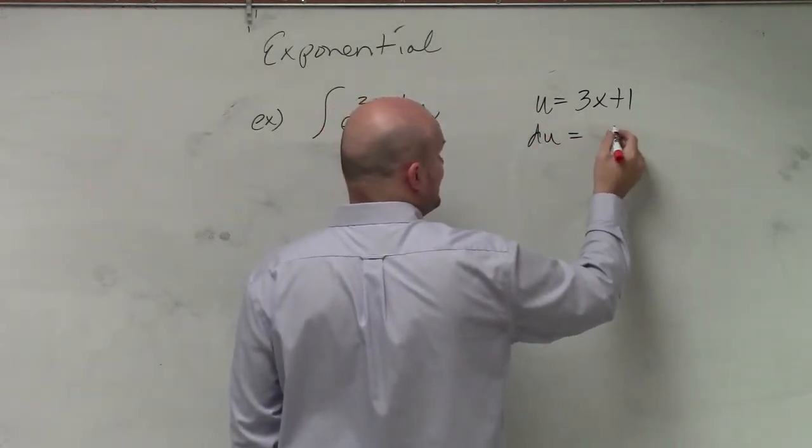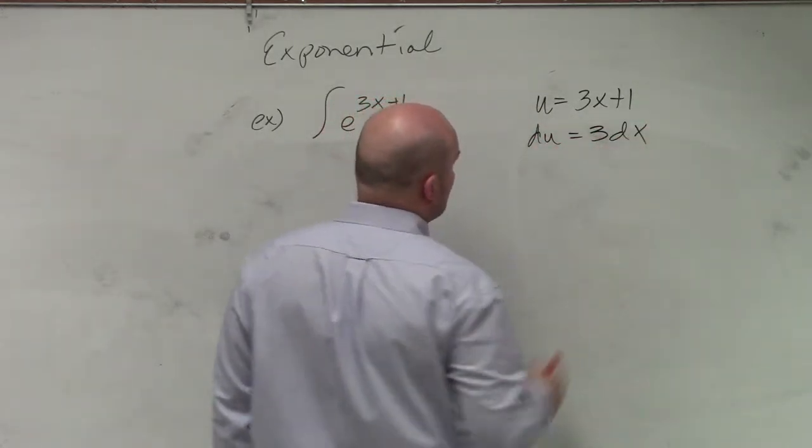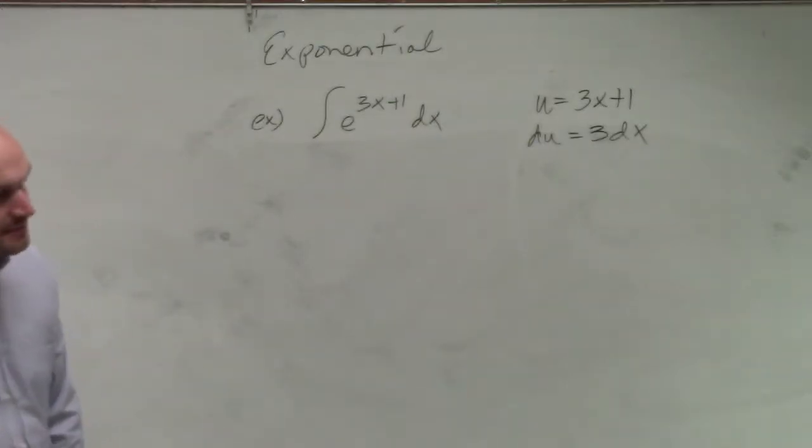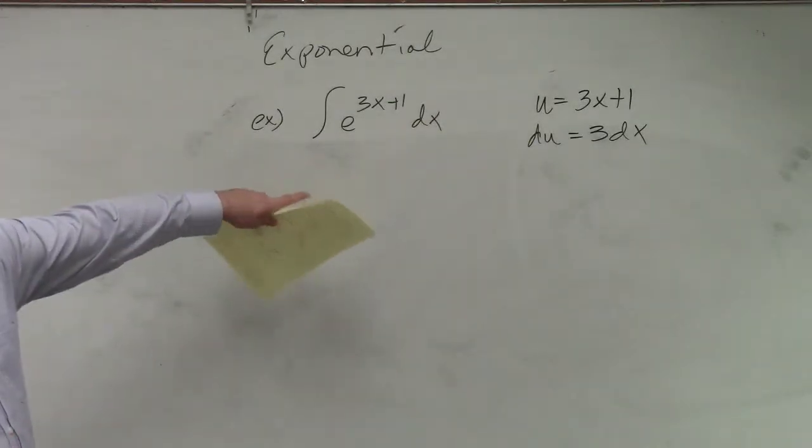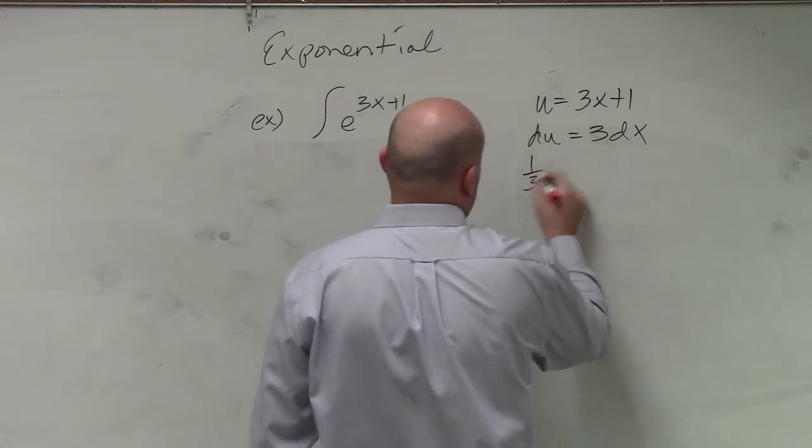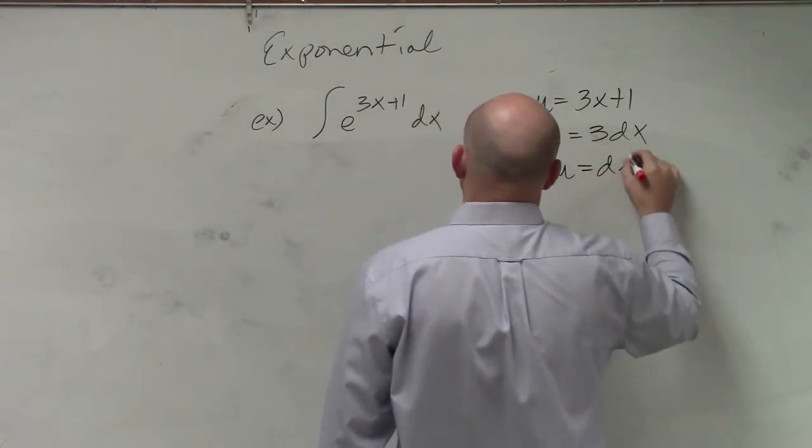And therefore, du is going to equal 3 dx. And you can see that we do not have a 3 here. So therefore, I'm going to write that as 1 3rd du equals dx.